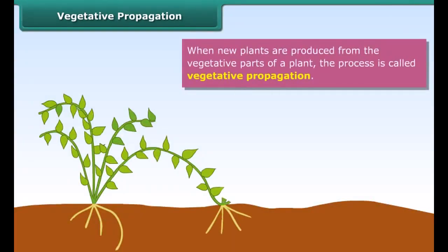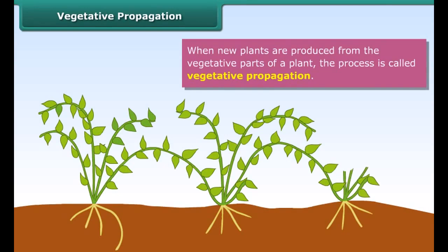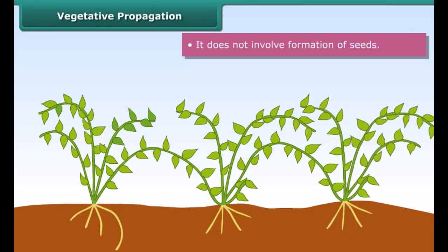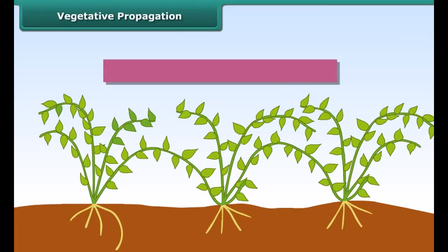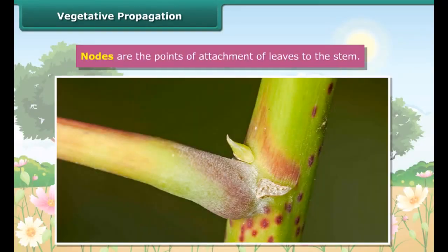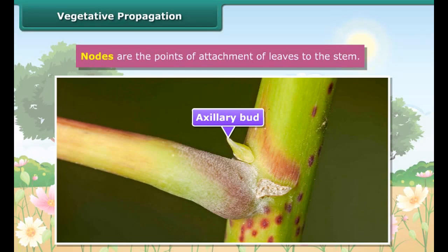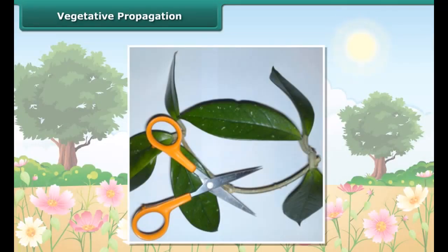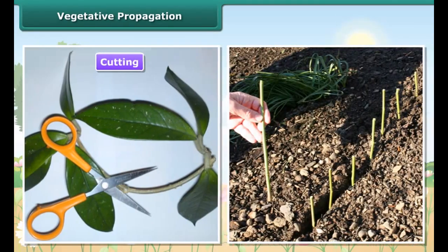Vegetative propagation. When new plants are produced from the vegetative parts of a plant, the process is called vegetative propagation. It does not involve formation of seeds. Have you ever seen buds at the nodes of a stem? These buds are called axillary buds. They do not produce flowers; rather they give rise to new branches. In some plants like rose, small portions of the stem containing nodes are cut from the plant — these cut portions are called cuttings. If planted and watered, they can produce new rose plants.